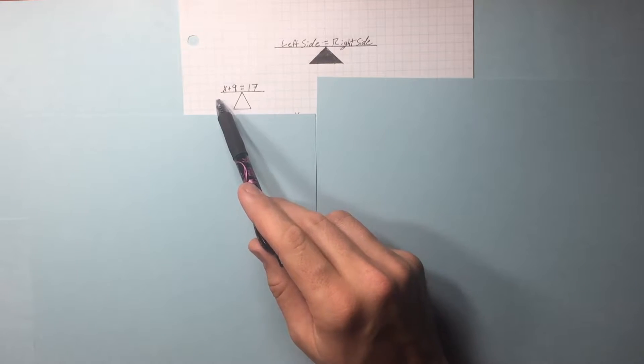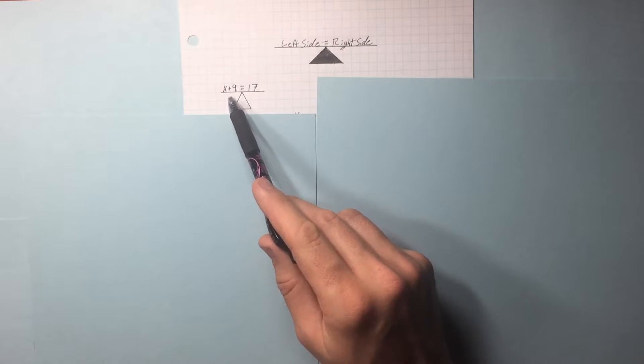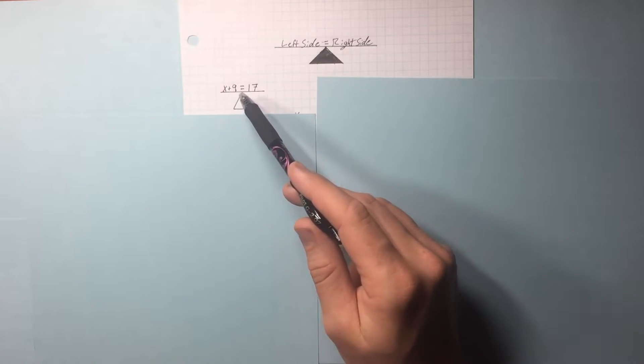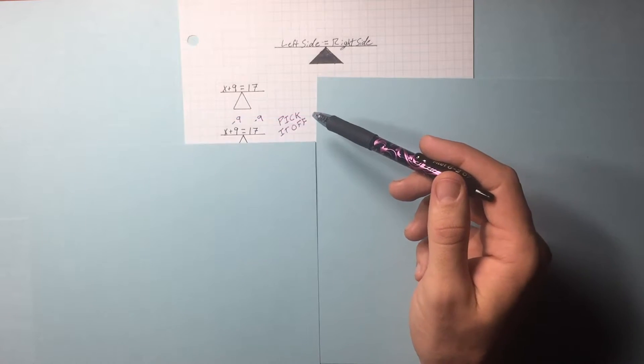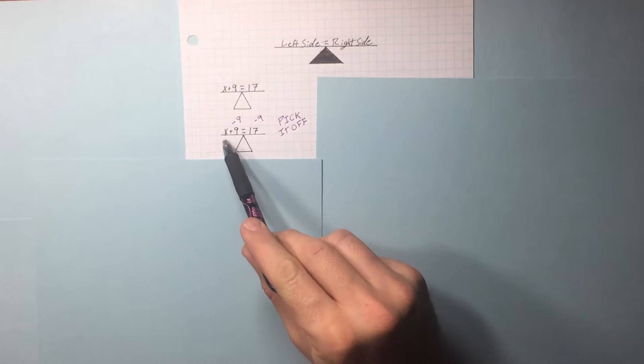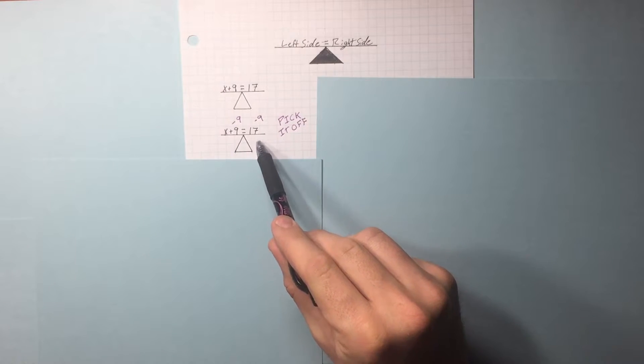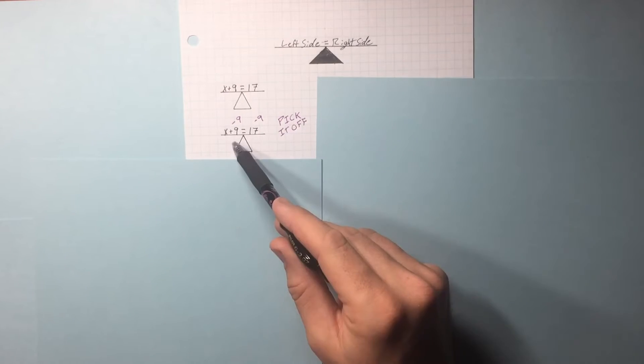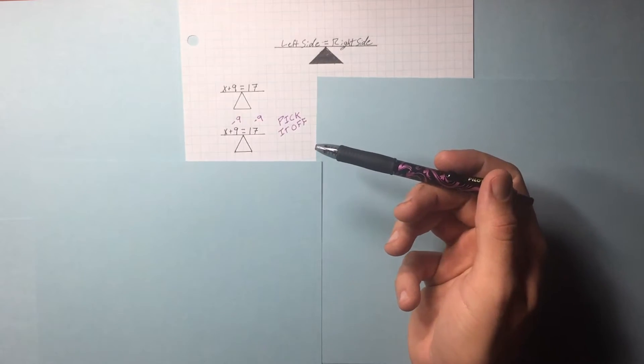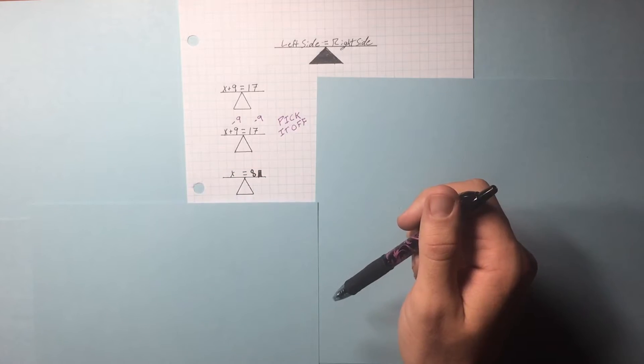What is standing in the way of our X being by itself? This plus 9. What do we do to get rid of that plus 9? The opposite function which is subtract 9. Subtract 9 from the left side. We got to subtract 9 from the right side too. Keep it balanced. This 9 minus 9 equals 0, so we're left with X plus 0 or X. 17 minus 9 is 8.